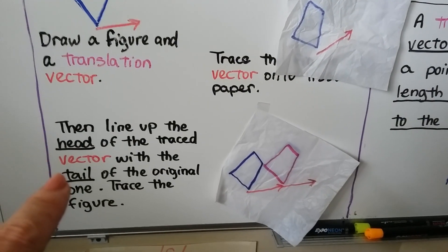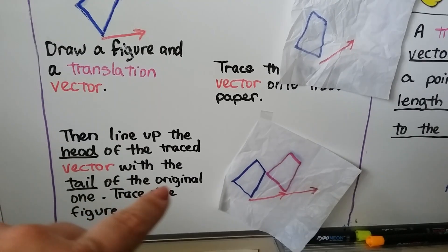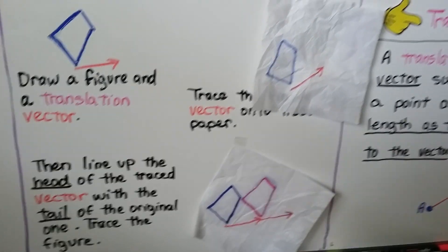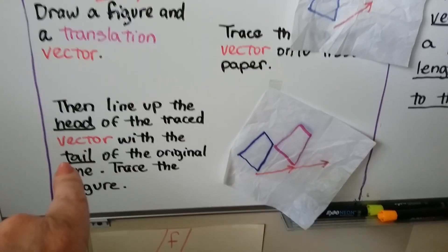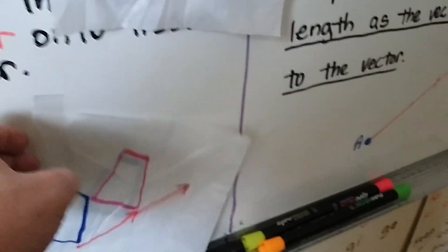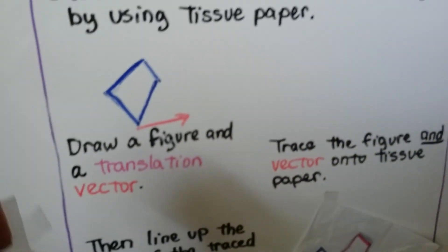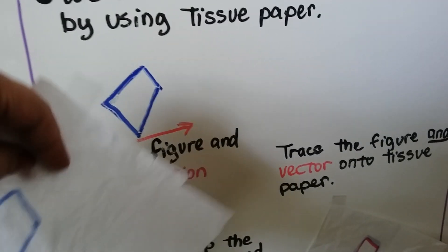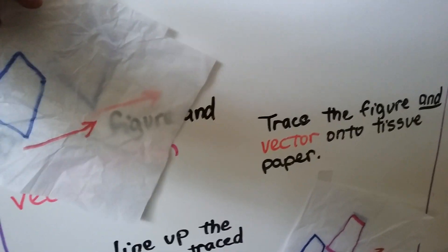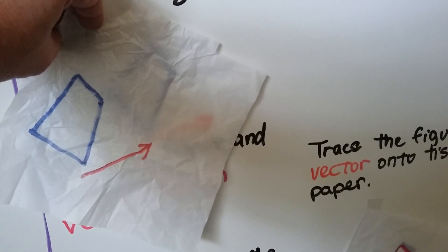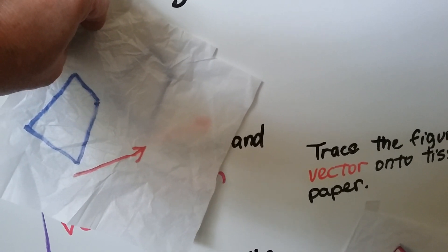Then what we're going to do is line up the head of the traced vector with the tail of the original one. We're going to take our tissue paper with our traced figure on it and line up the head of this translation vector with the tail of the original one. Then we're going to trace the one underneath it. We're going to have two of them.